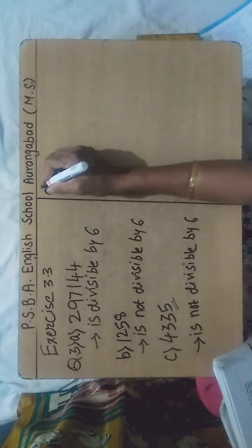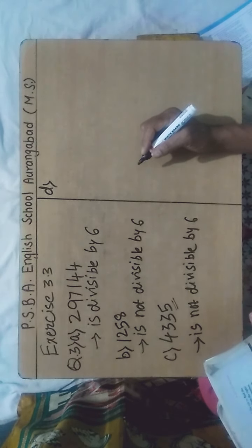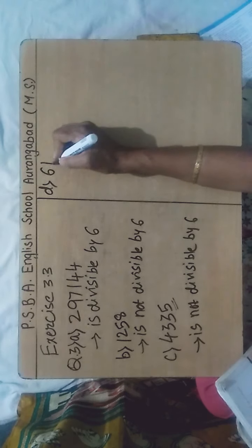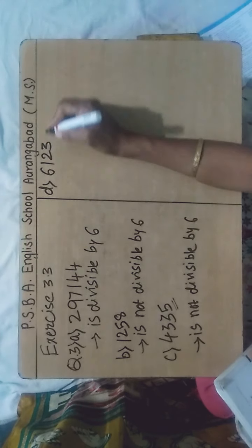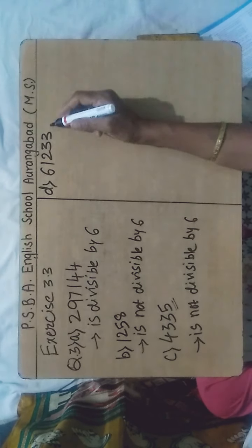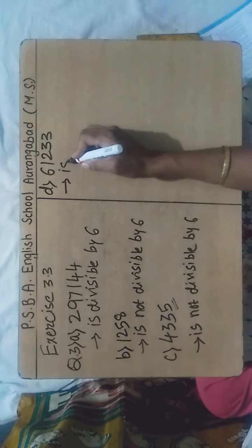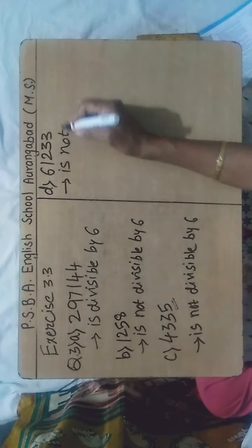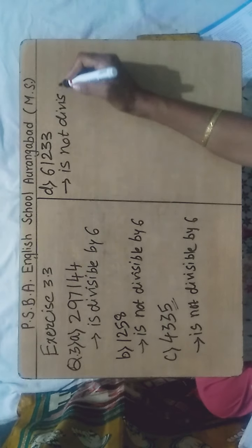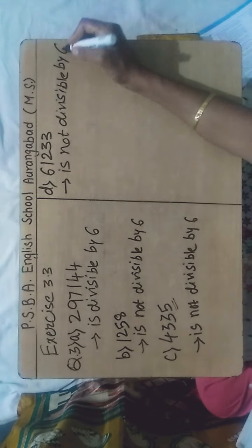Sub-question D: the number given to us is 61,233. It is having 3 at its ones place, therefore it is not divisible by 2. Don't go for the divisibility by 3 — this number is not divisible by 6.